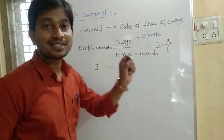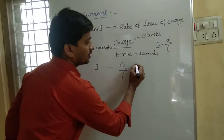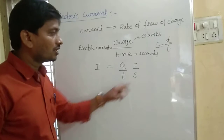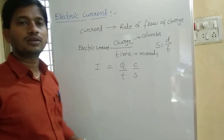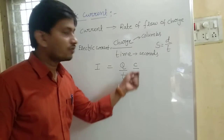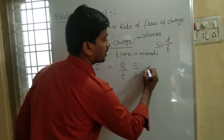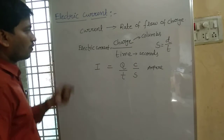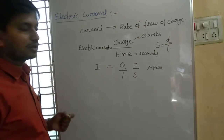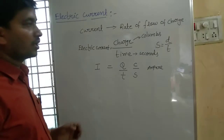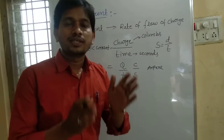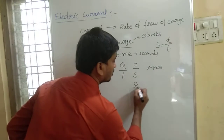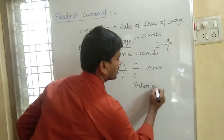The SI unit of time is seconds, so Coulombs per second. What is the SI unit of current? The SI unit of current is Coulombs per second, and we have a special name for that — Ampere. So the SI unit of current is Ampere. And electric current is a scalar quantity.